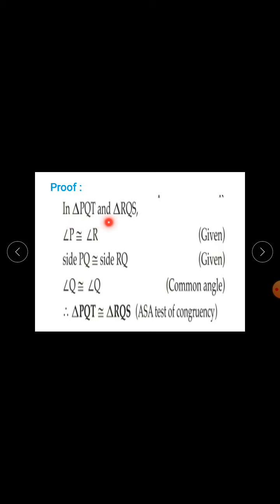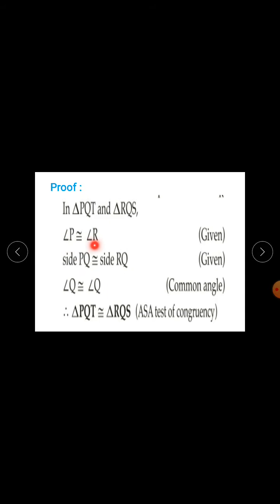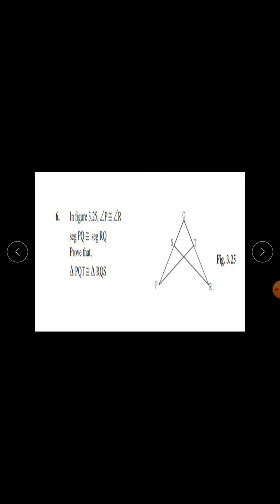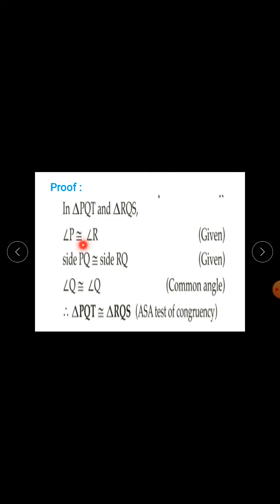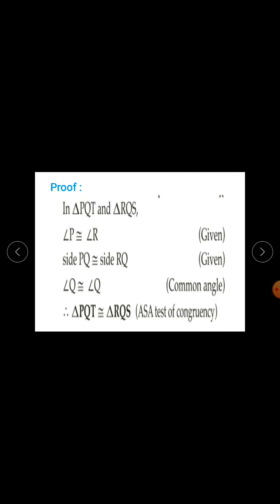In triangle PQT and triangle RQS: Angle P is congruent to angle R — reason is given. Side PQ is congruent to side RQ — reason is given.